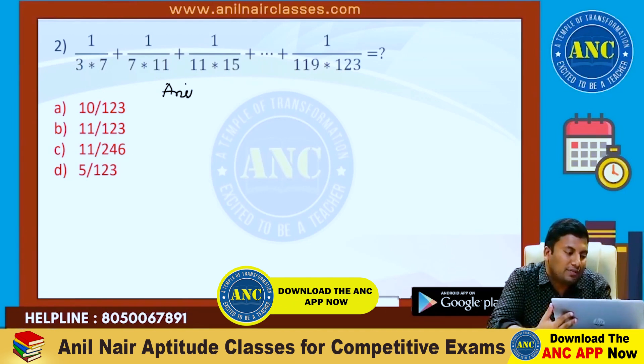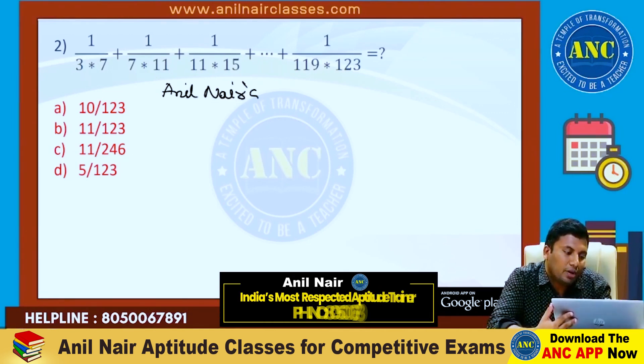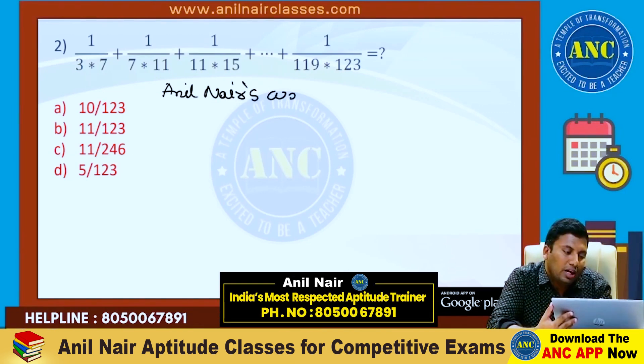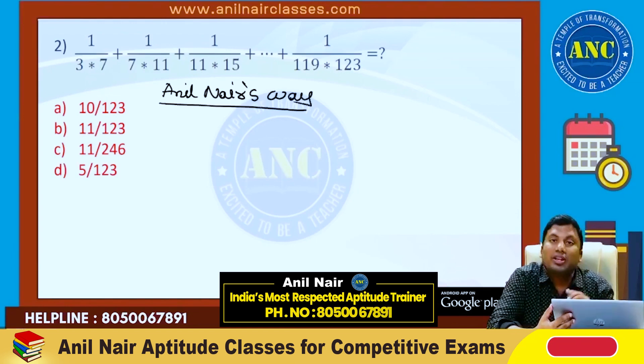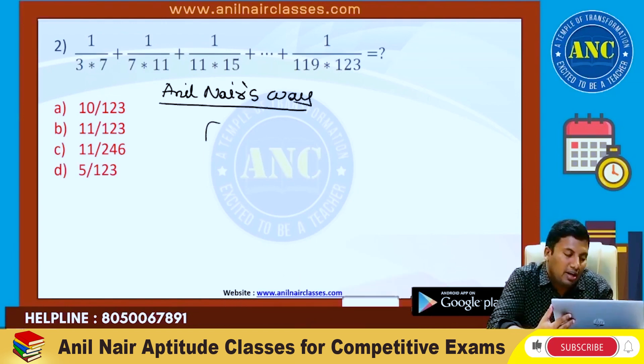First, Anil Nair's way of solving the question. Now, if there are two numerical values in the denominator, condense it to one numerical value.